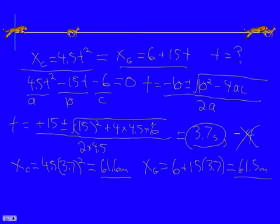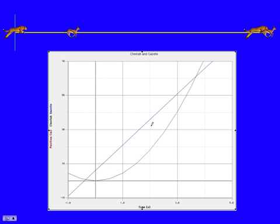Let's take another look at what we're doing here. What we've really done is we've found an intersection of two lines. This is the graph of the cheetah's motion. If you were to graph this out, x cheetah is 4.5 t squared, not surprisingly, a parabola.